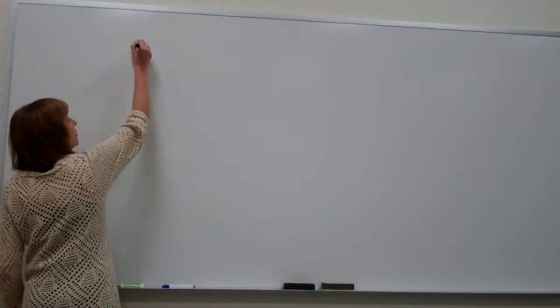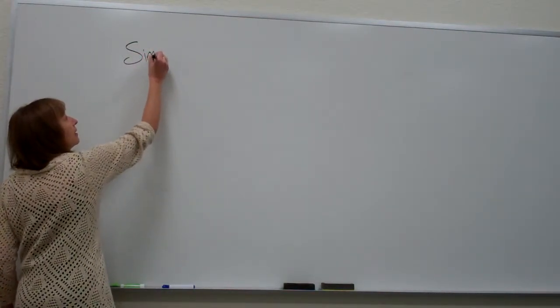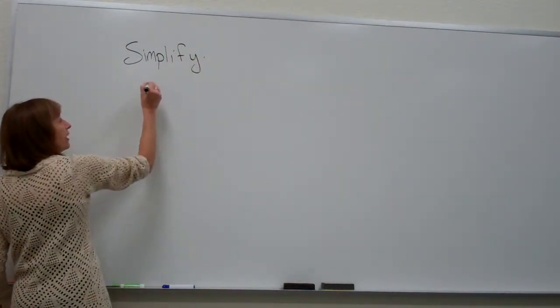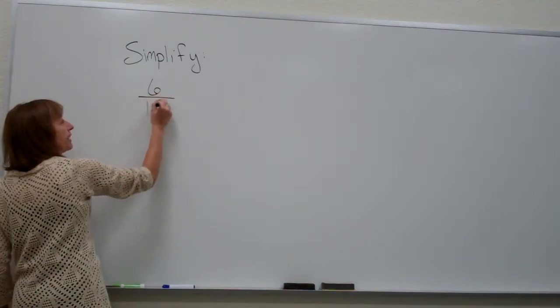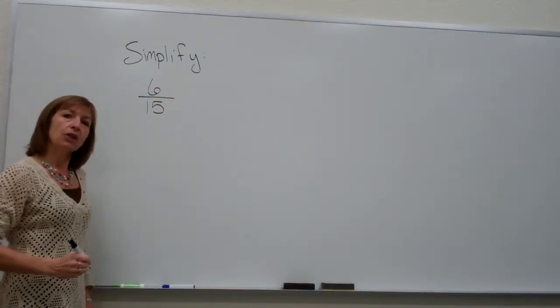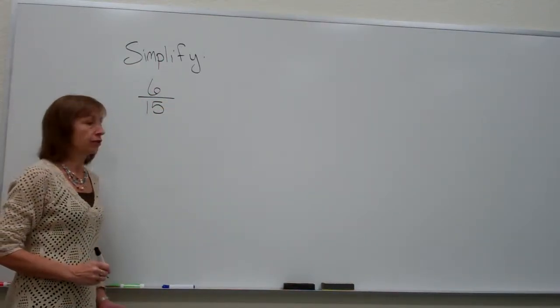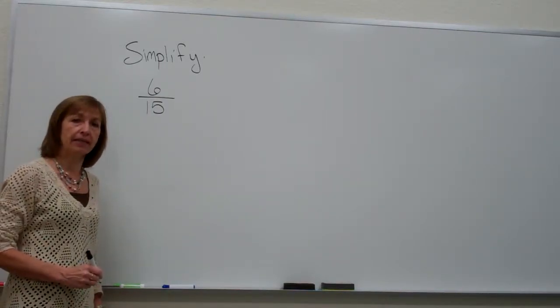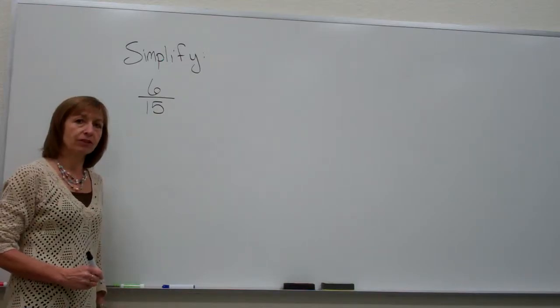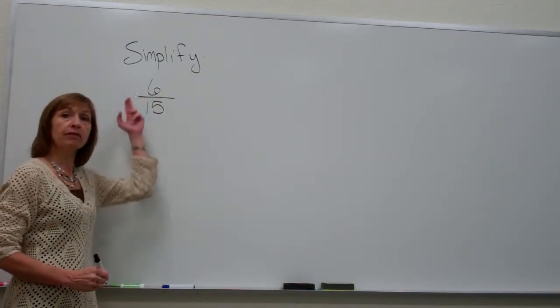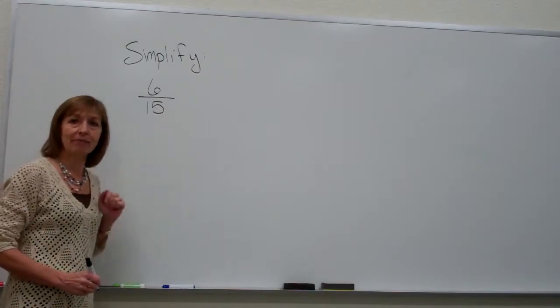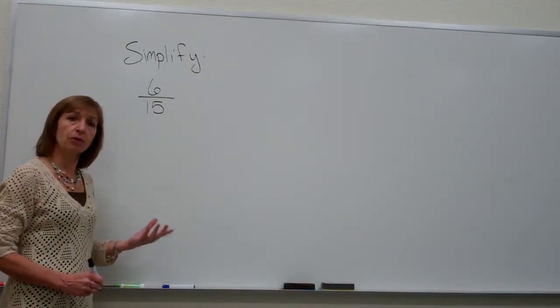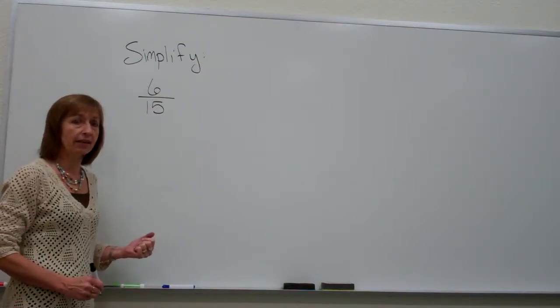For example, if we wanted to simplify the fraction 6/15, we know that when simplifying numerical fractions, we want to find the factors that are common to the numerator and denominator, and remove any common factors that we find, so we can write an equivalent fraction that has the same value as the original, only written with smaller numbers, so it's easier to grasp the value.